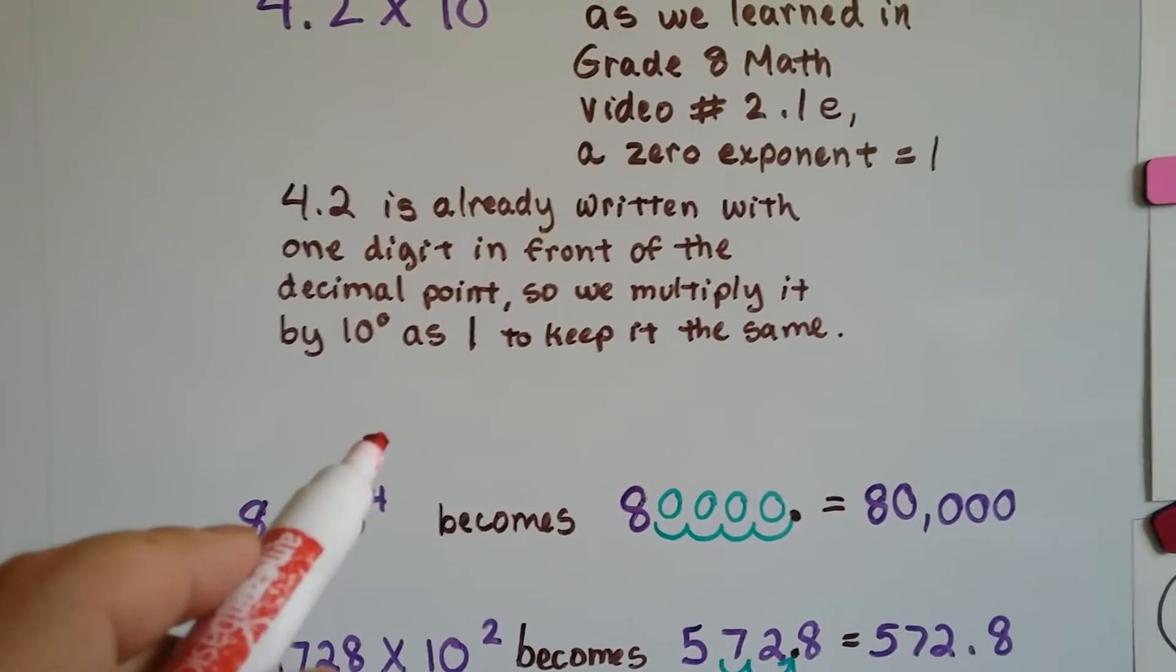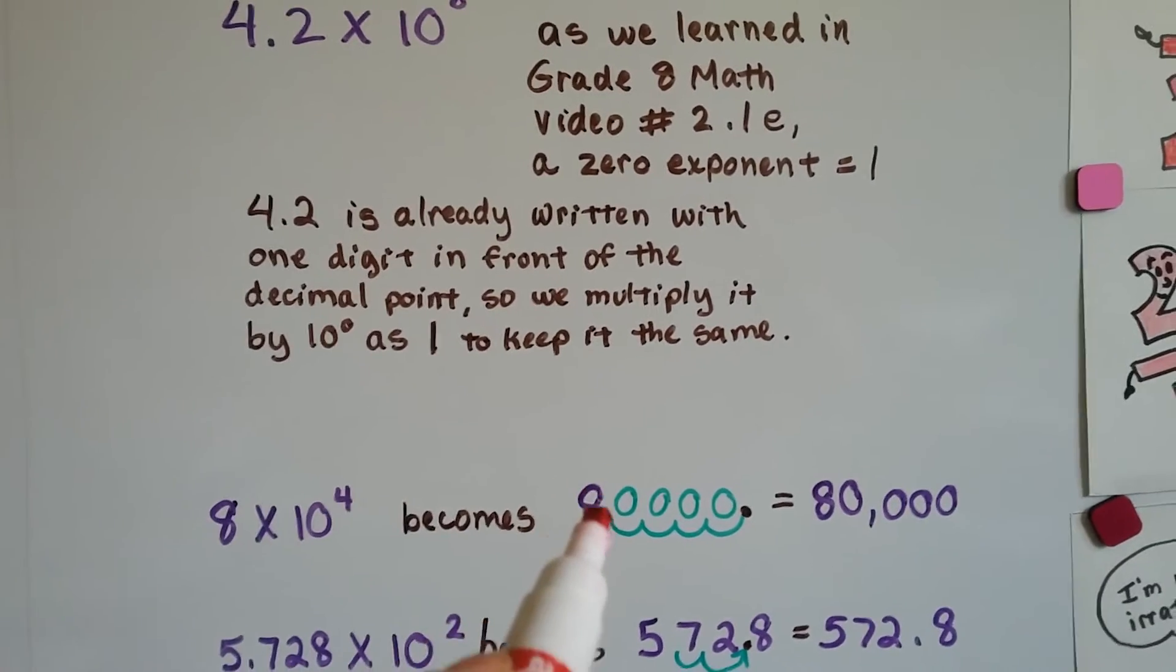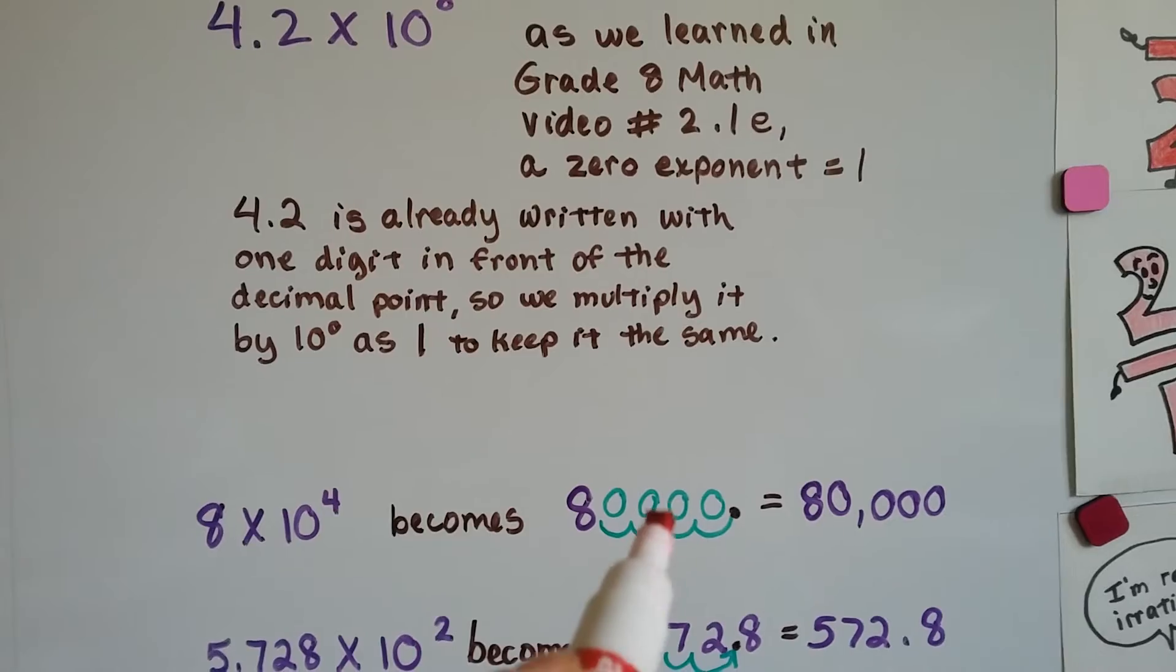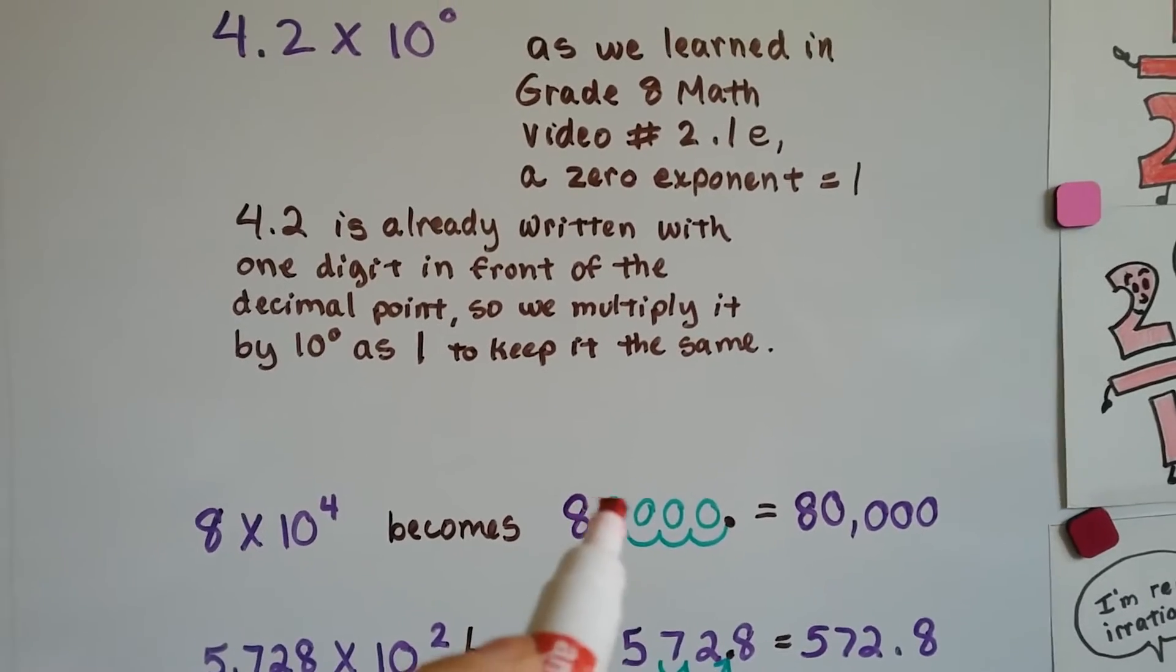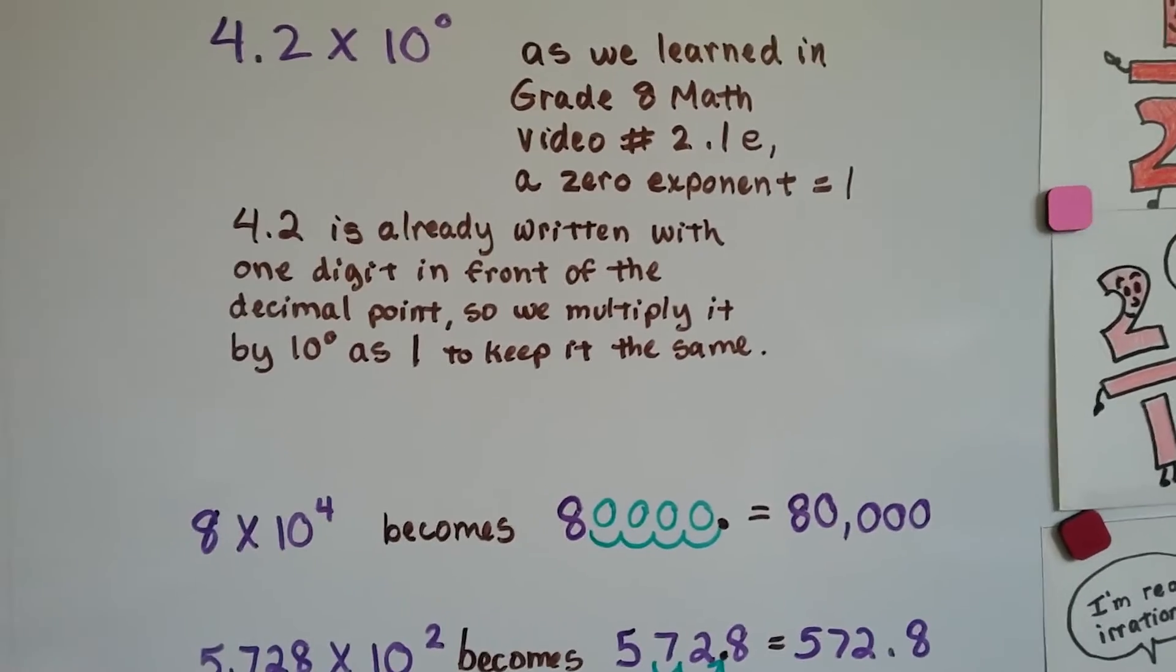8 times 10 to the fourth becomes an 8 with 4 hops: 1, 2, 3, 4. We fill in the zeros and we see we've got 80,000.